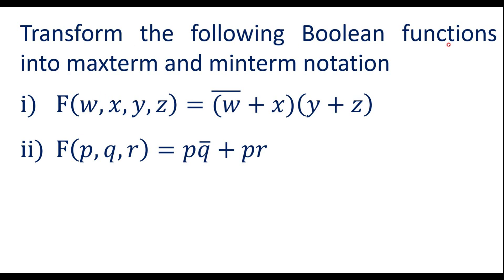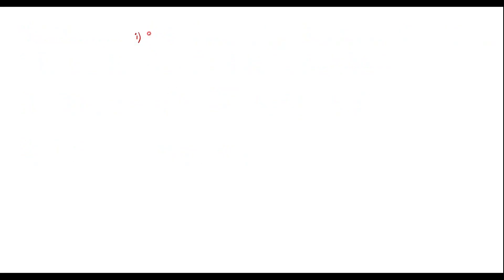Transform the following Boolean functions into max term and min term notation. Two Boolean functions are given and we have to convert them into max term notation and min term notation. Let me consider the first one: f(w, x, y, z) = (w̄ + x)(y + z).